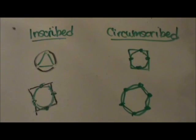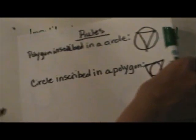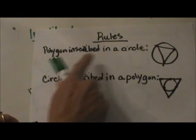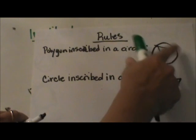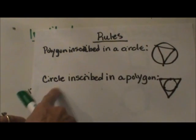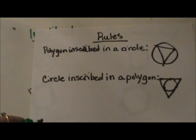So that is the difference between inscribed and circumscribed. A polygon that is inscribed in a circle means the polygon is inside. A circle that is inscribed in a polygon is on the inside. I hope this video was helpful.